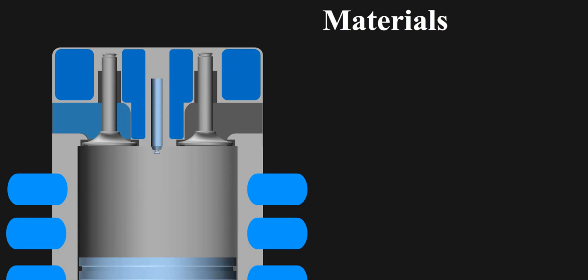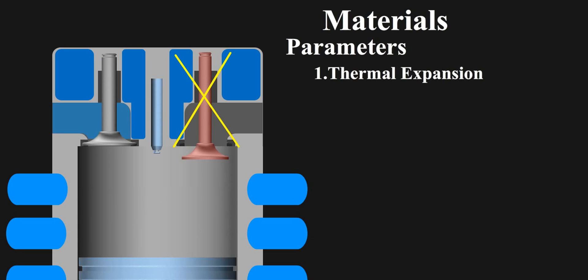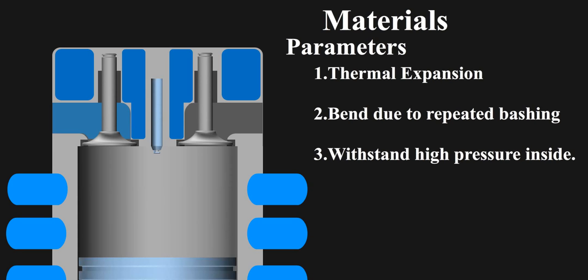There are actually very limited number of materials which can be used to make valves. As there are lot of parameters to consider such as thermal expansion valve should not expand thermally giving leaks. It should not bend due to repeated bashing for billions of reciprocations and should also withstand high pressures inside.